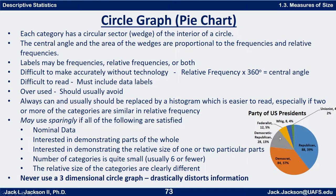Here's an example with information about the party of the US presidents. You can see a lot of information given in this particular graph. Each category has a circular sector or wedge of a circle — like a slice of a pie. The central angle and the area of the wedges are both proportional to the frequencies and to the relative frequencies of these different categories.